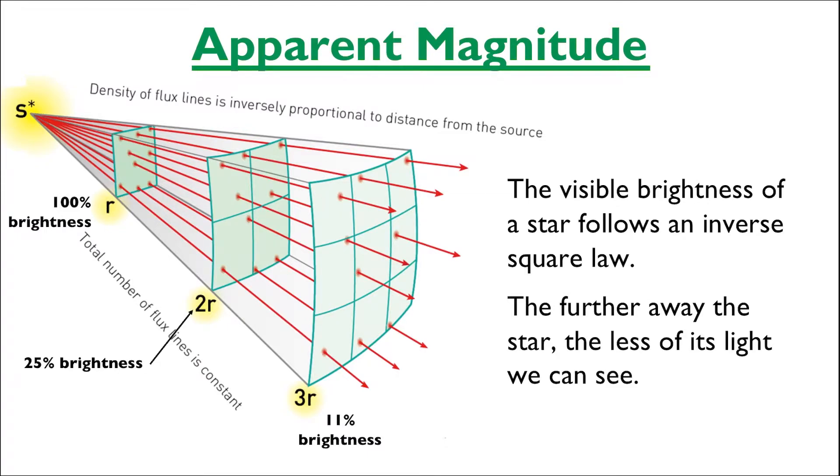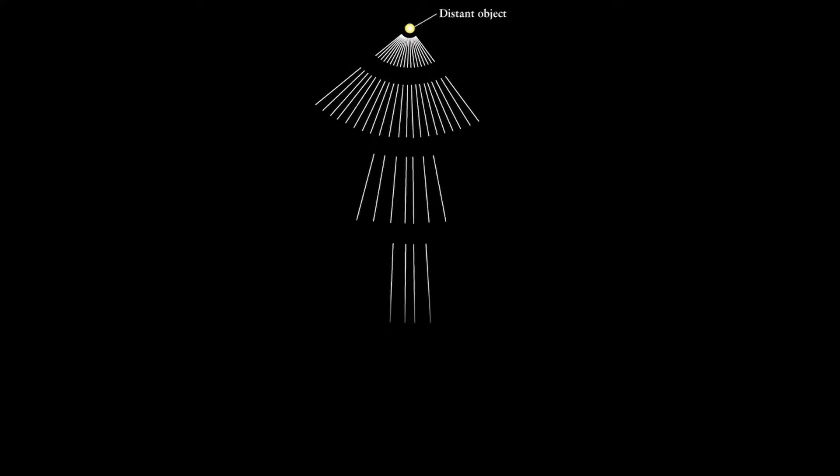The further away the star, the less of its light we can see. When light emanates outwards from a radiant object like a star, the light travels in all directions, in all 360 degrees. The further away we are with our telescopes or binoculars looking at that star, the less of its light rays we will see. That's why distance makes such a big difference in the magnitudes of stars.